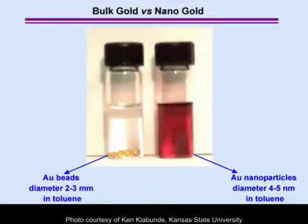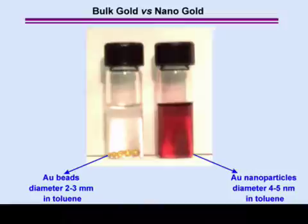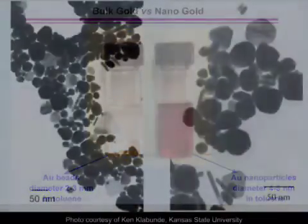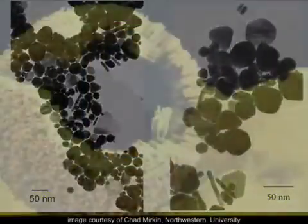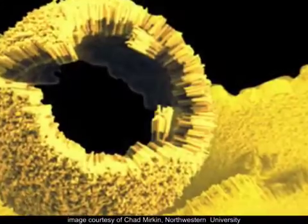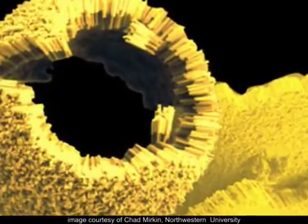Large gold beads do not dissolve in toluene and maintain their gold color. But notice that 4 to 5 nanometer gold particles dissolve in this solvent to form a clear red solution. The color of light reflected and transmitted by these metallic nanoparticles changes with the size of the particle.